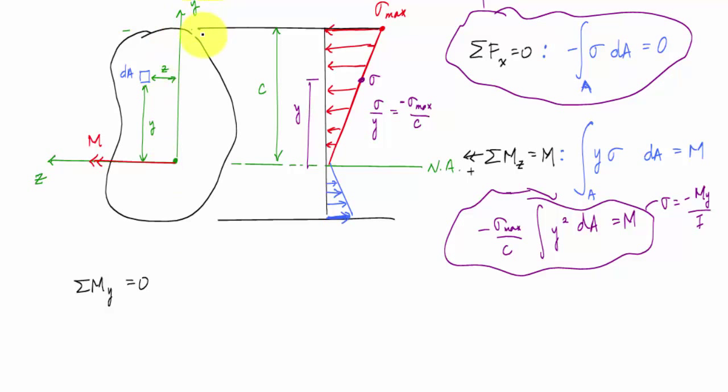So here this would be a positive y moment in this case here. So this again, this increment of force sigma dA right here with an arm of z is causing a negative moment about the y-axis, integrated over y is equal to zero.